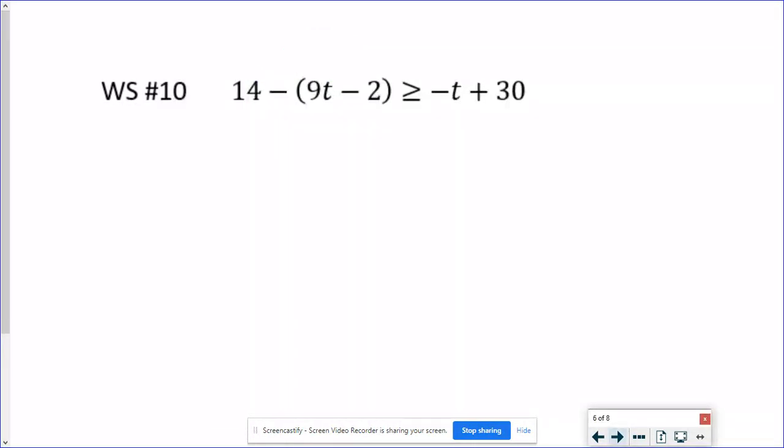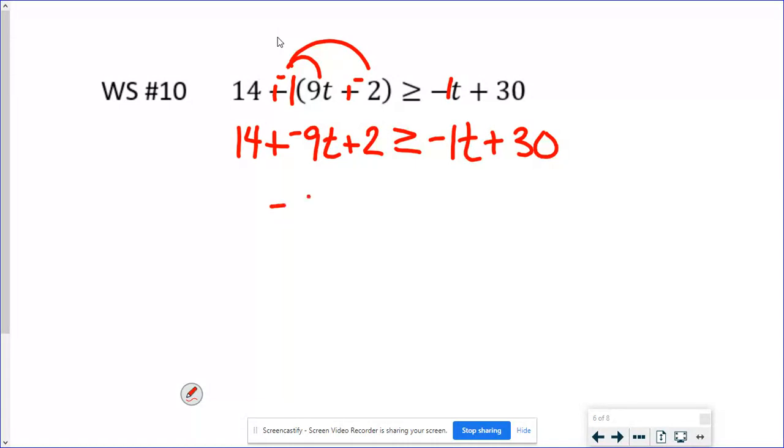Here's number 10 from the worksheet. And again, I really worry about the distribution that's just a subtraction right here. Keep in mind what that really is. I know that I can put a 1 in front of that parenthesis and then I would do a keep, change, change. So that's really a negative 1 that's going to distribute. I would change that subtraction and I would sneak a 1 in front of that t. So I have 14 plus negative 1 times 9t is going to be a negative 9t. Negative 1 times a negative 2 is positive 2. Negative 1t plus 30. So we're back to the variables on both sides of the inequality. But let's clean up the left hand side. So I've got negative 9t. When I add those two together, I get plus 16.